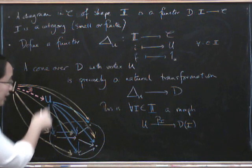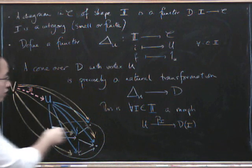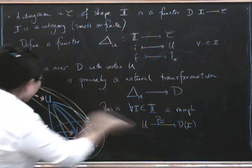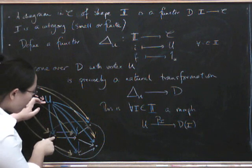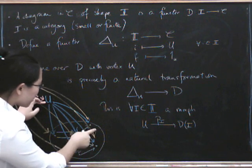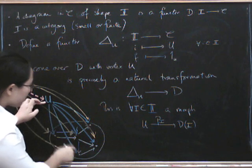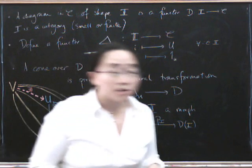Perhaps you see this is the projection parts of the cone. So far we've got the data which tells us we've got a vertex U. And for every object D of i in our diagram, we have a morphism going down to it, which is the projection. Now we're missing the commuting condition, right?